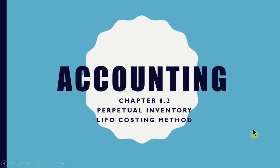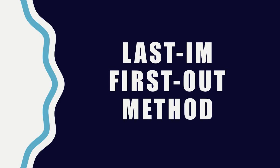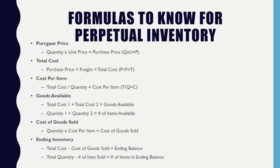Now that we're finished our first section of Chapter 8 for Perpetual FIFO, we're going to continue learning the second costing method, which is LIFO — last in, first out. The formulas are identical to FIFO. The only difference is when we calculate our cost of goods sold, this is where we take our batches of inventory differently.